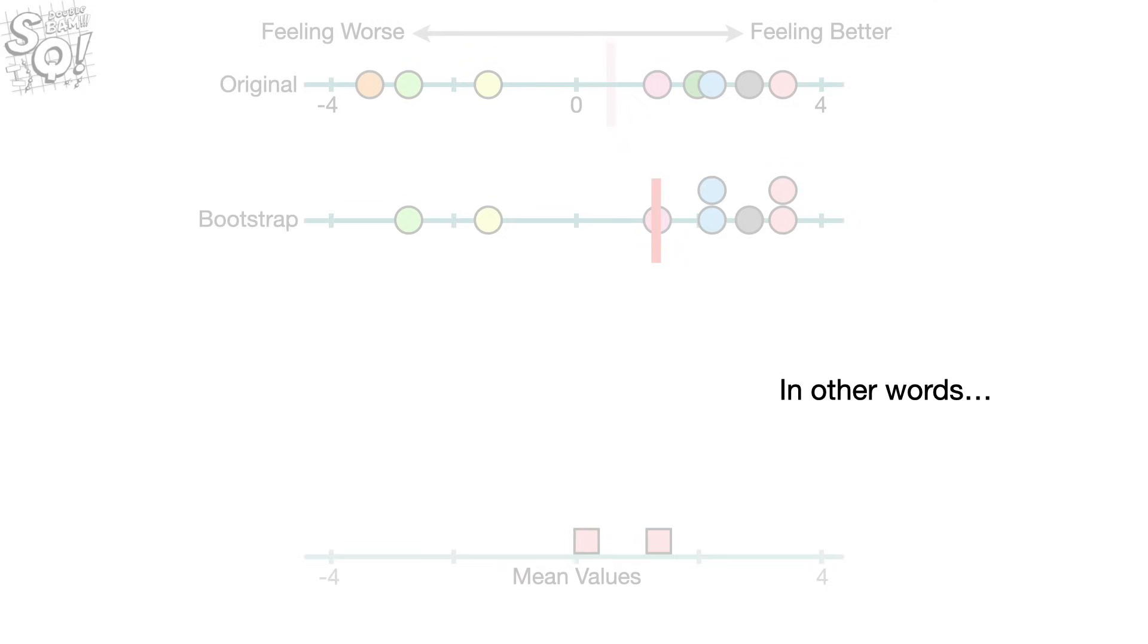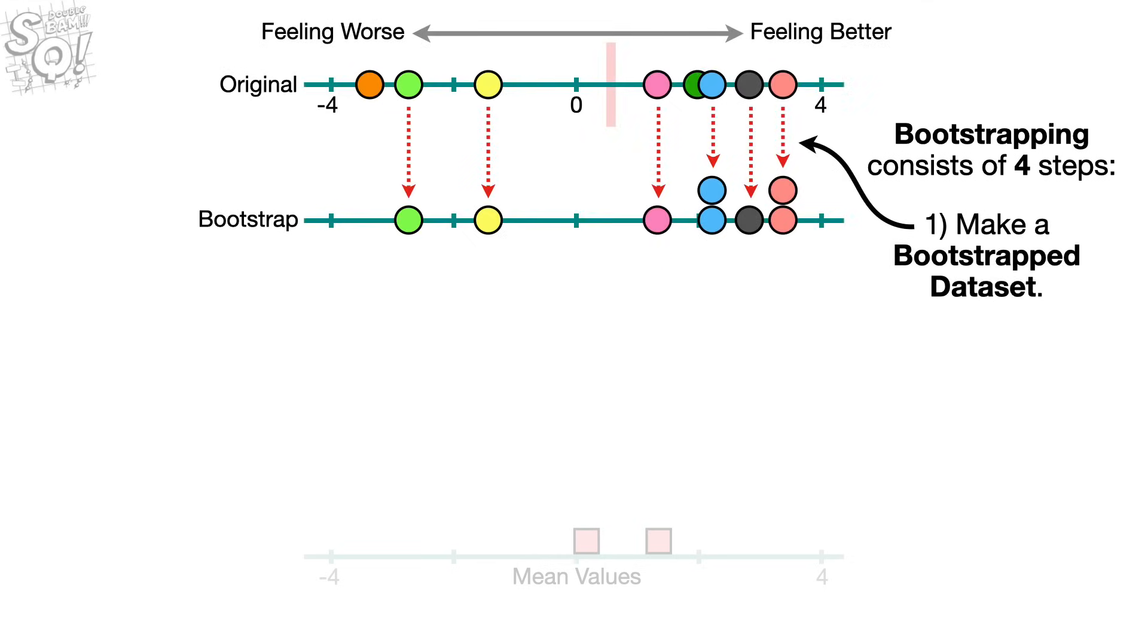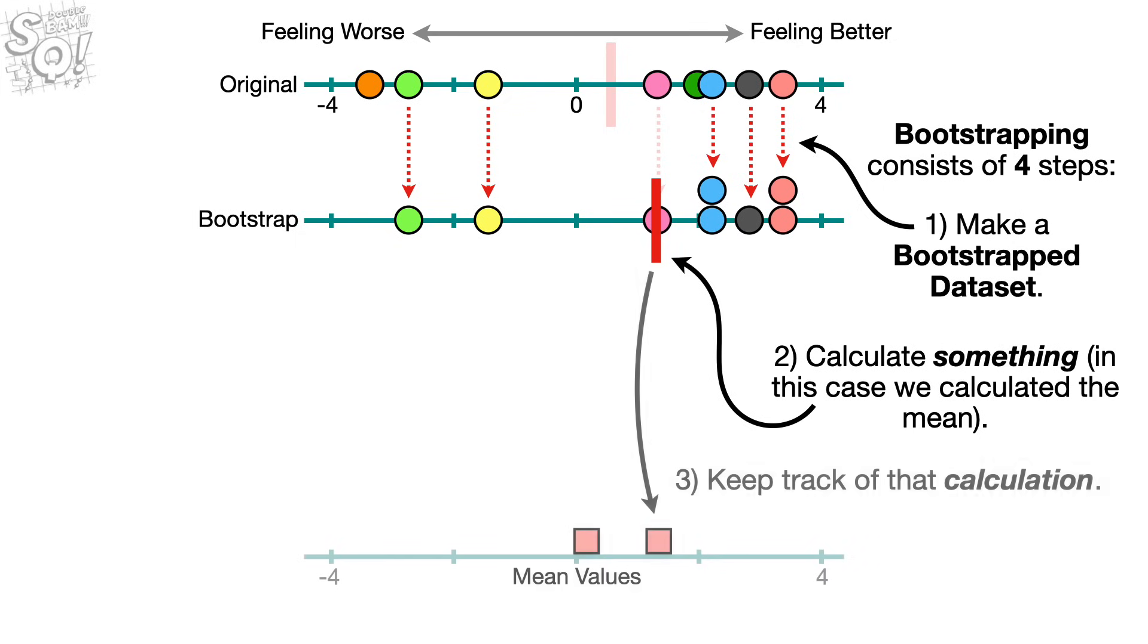In other words, bootstrapping consists of four steps. First, make a bootstrapped data set. Second, calculate something. In this case, we calculated the mean. Three, keep track of that calculation. And four, repeat steps one through three a bunch of times.